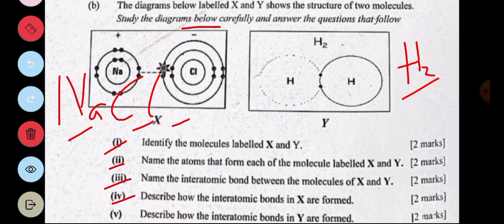Part IV, describe how the interatomic bonds in X are formed. For ionic or electrovalent bonds, they are formed when there is a complete transfer of electrons from the electropositive atom to the electronegative atom. The electronegative atom has an affinity to accept electrons.